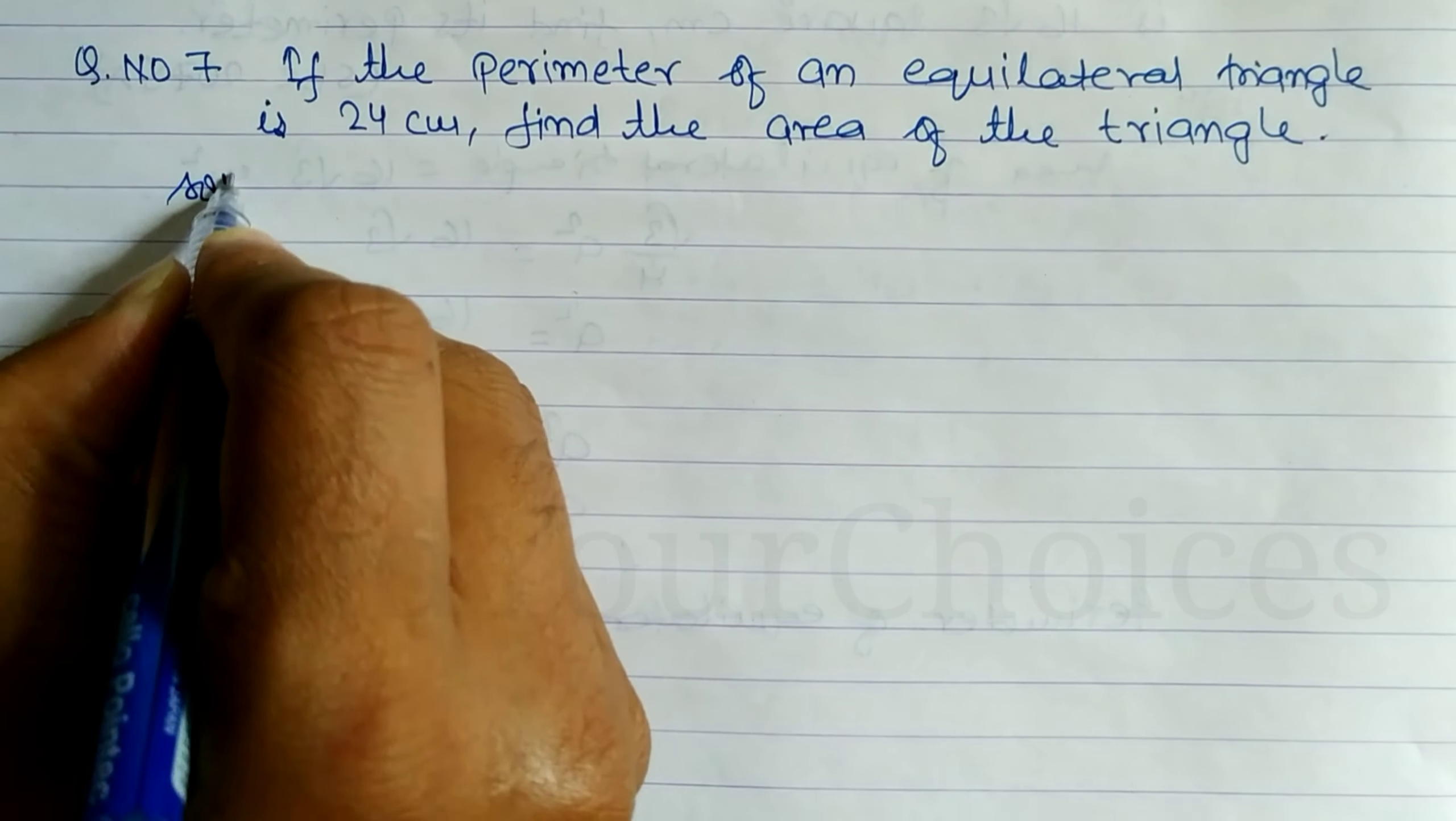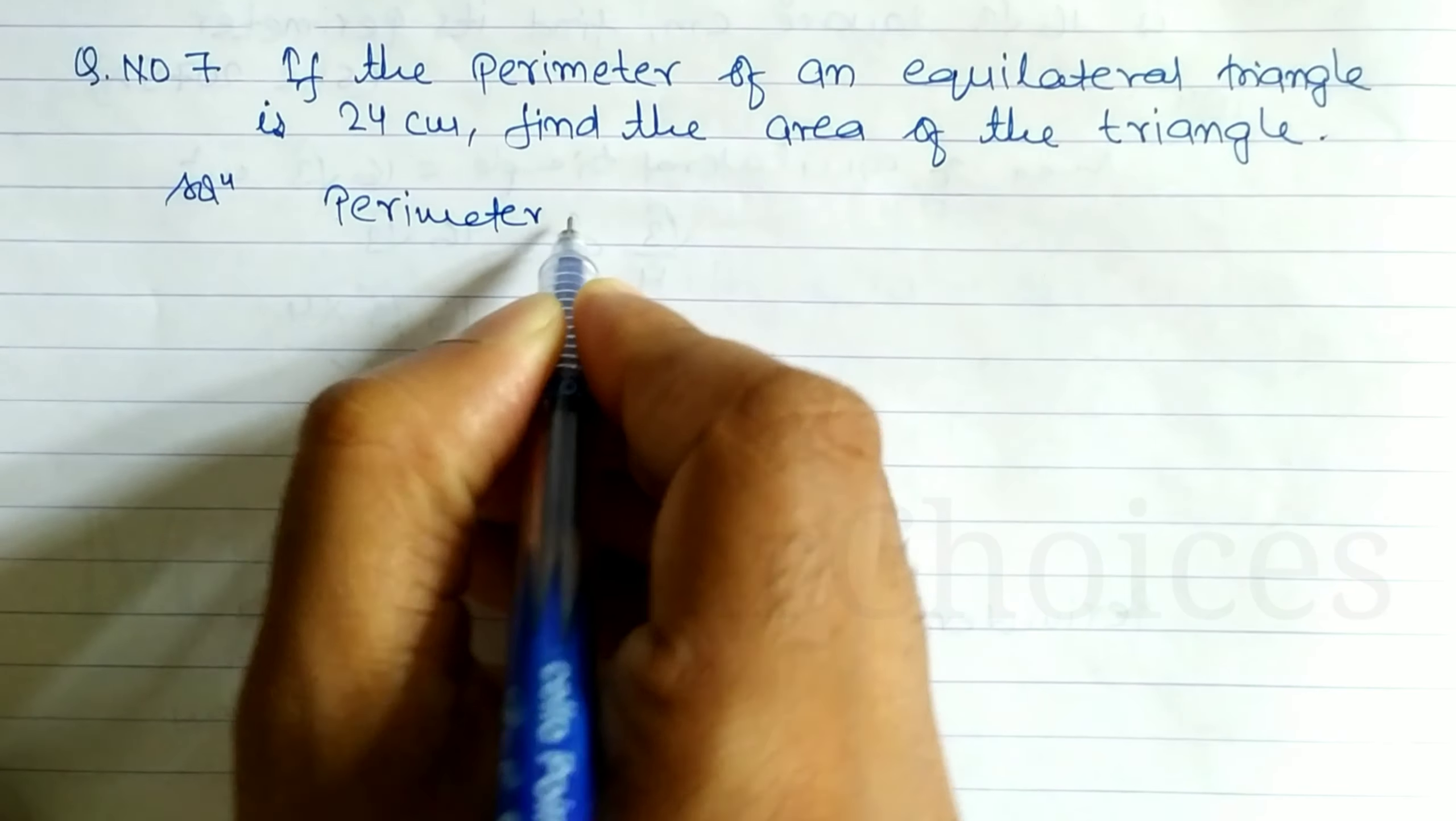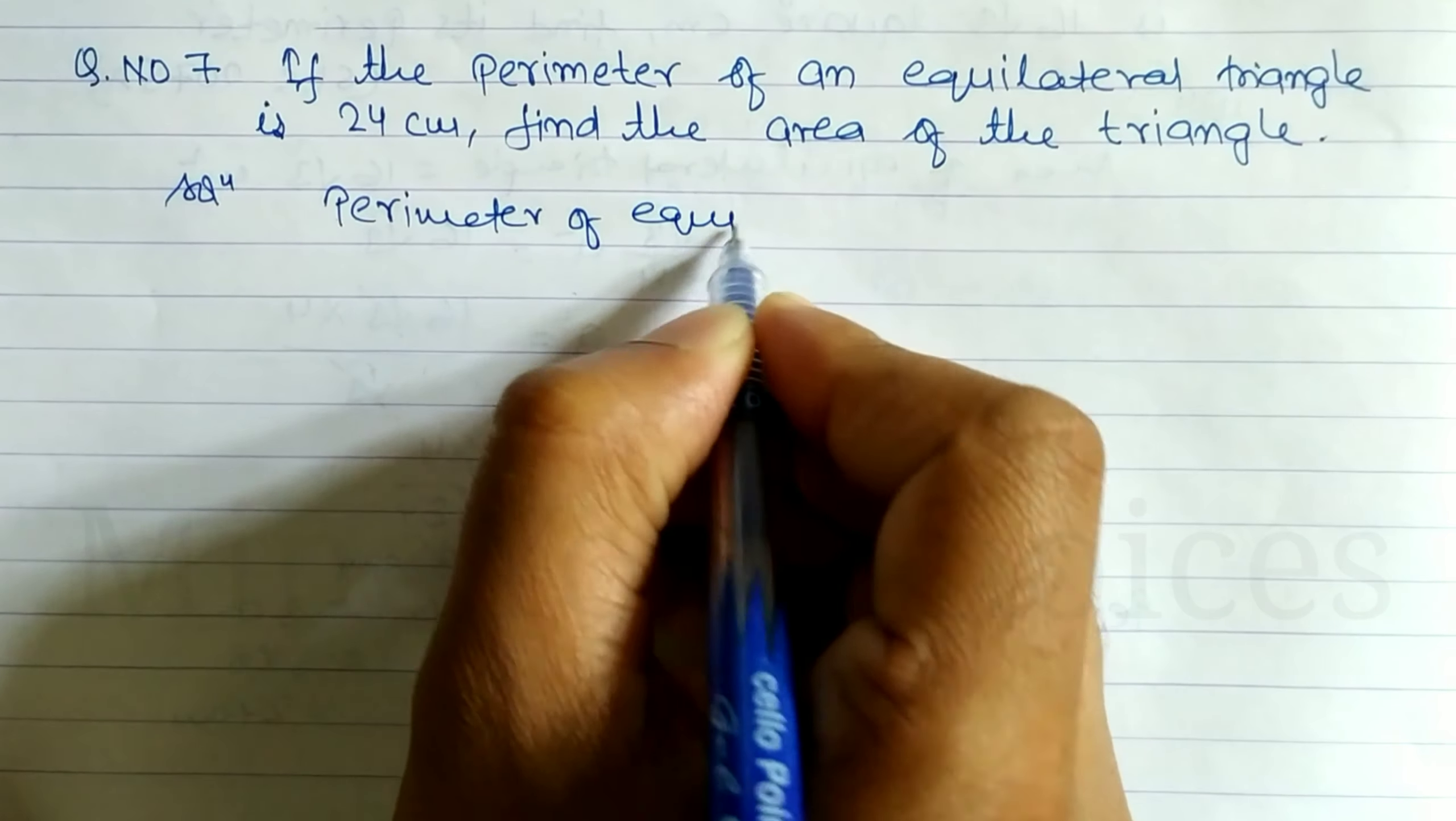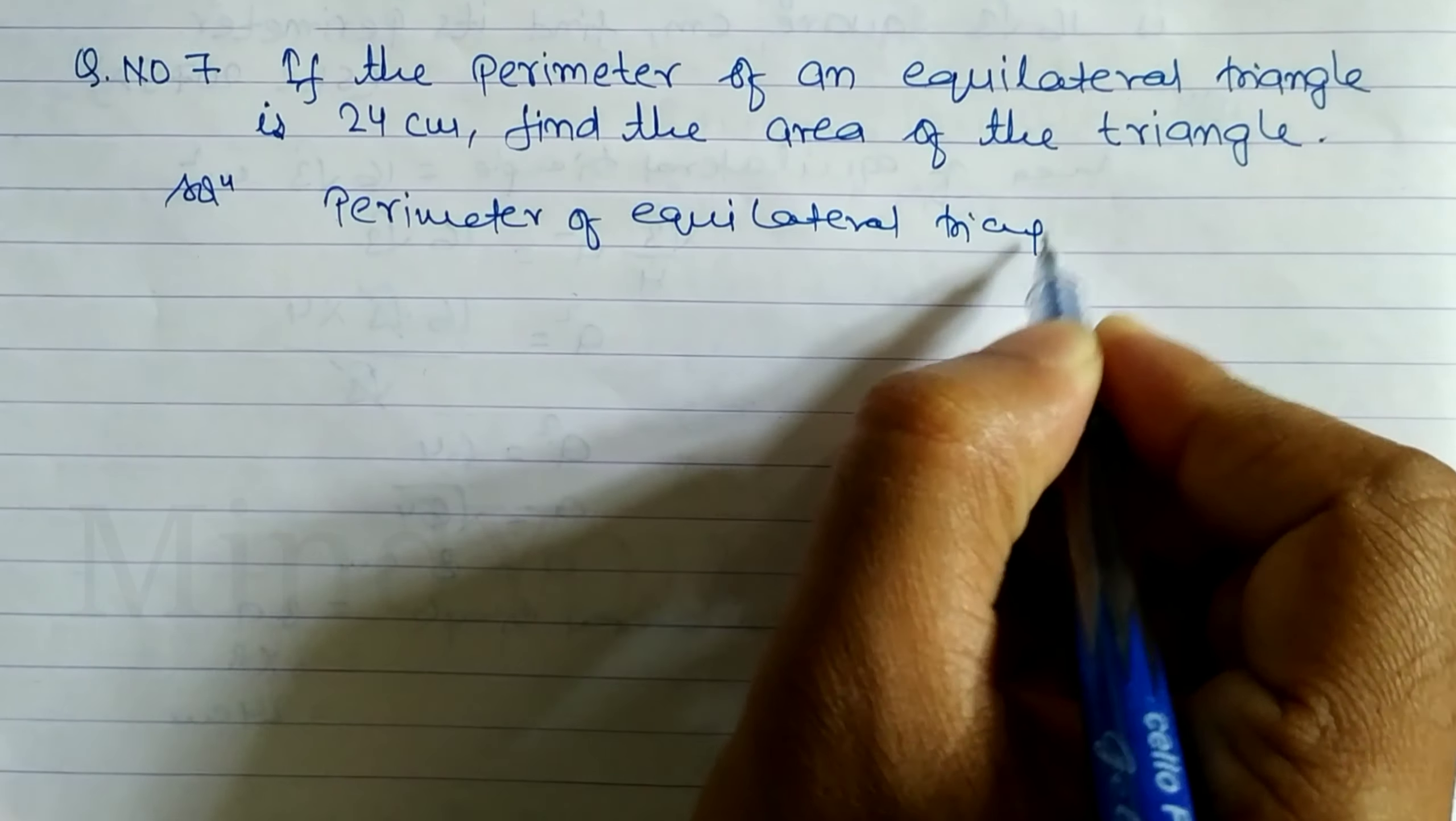So let's take a start here. Perimeter of equilateral triangle. What is the formula? 3a.